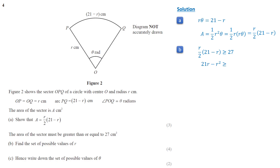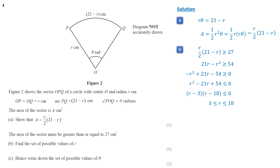We simplify the inequality to get the quadratic inequality: negative r squared plus 21r minus 54 is greater than or equal to 0. To make it easier to solve, we multiply by negative 1, which flips the inequality. We factor the quadratic as (r − 3)(r − 18), which tells us that r lies between 3 and 18, including the endpoints.